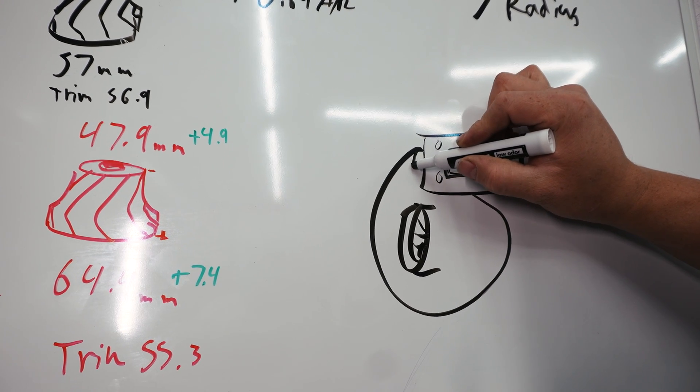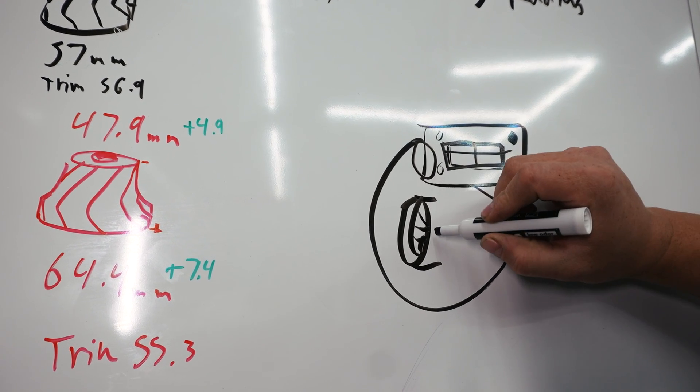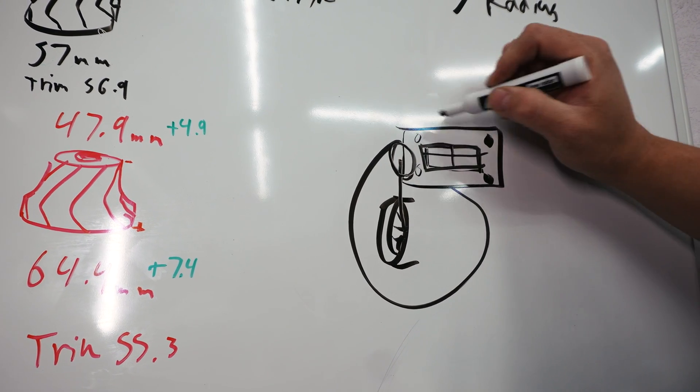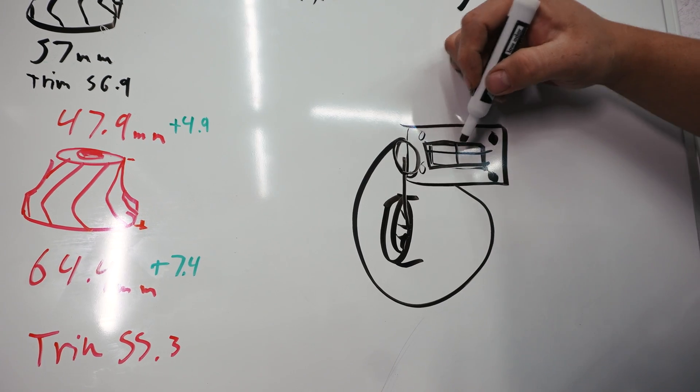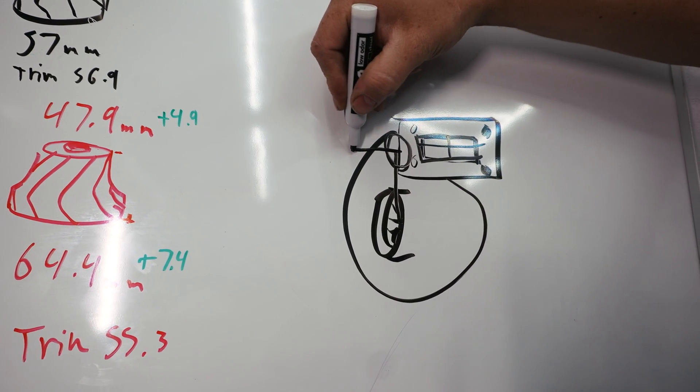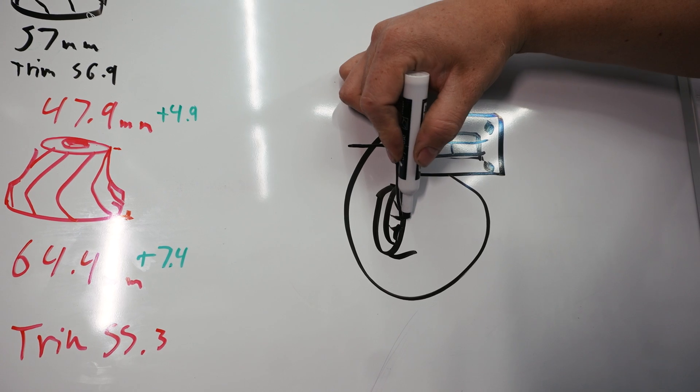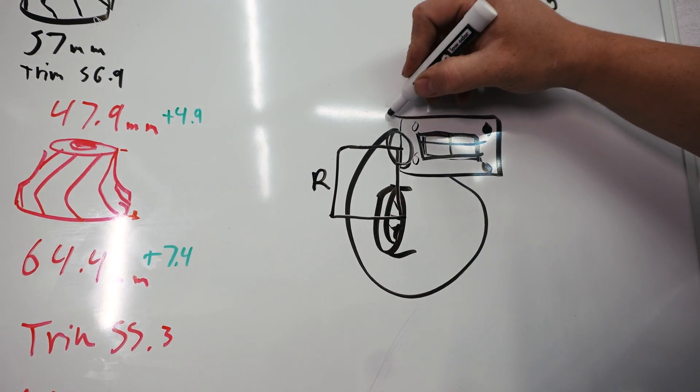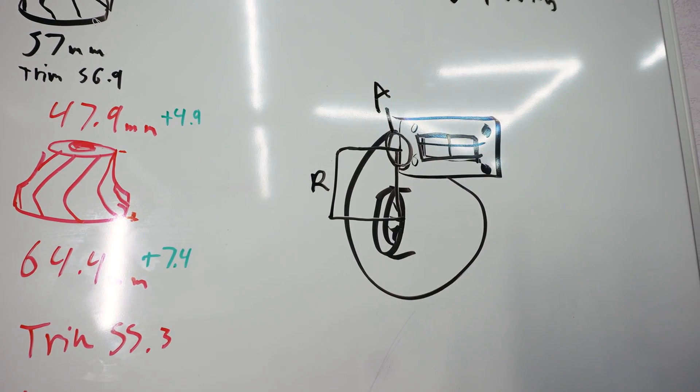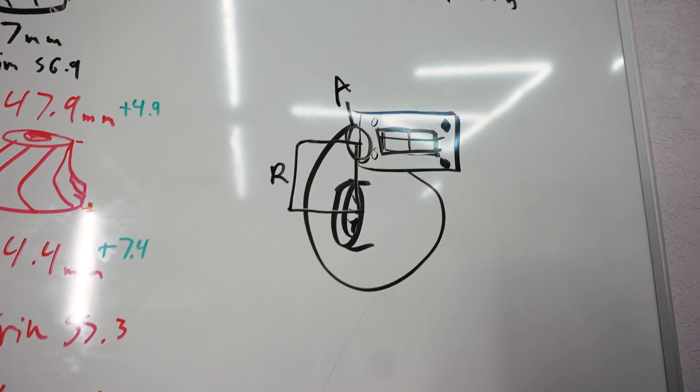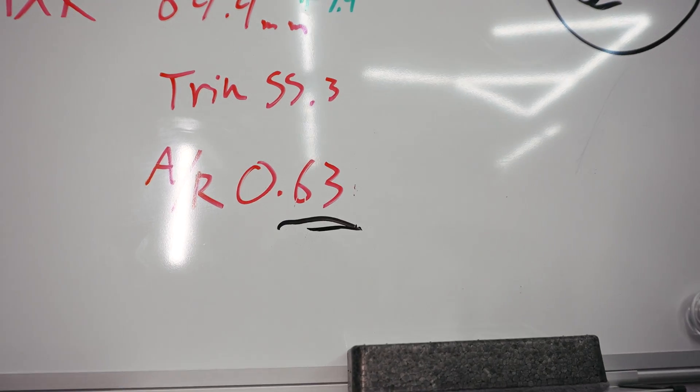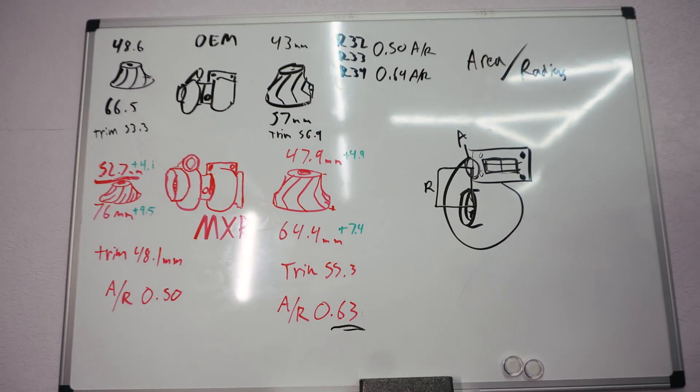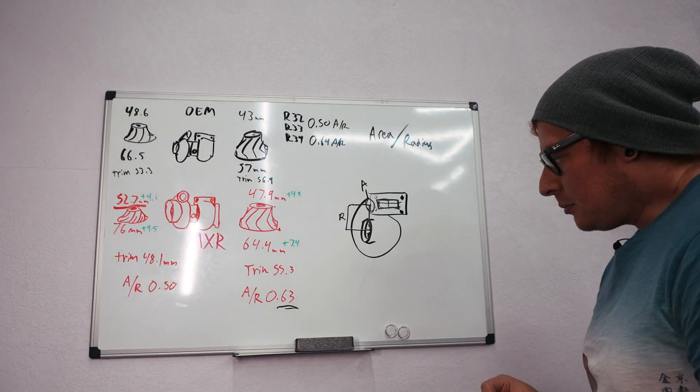This is going to be your area and then the radius is the center of that area versus the centerline of the turbine itself. So that's your radius and that's your area. So you divide that by that and then that'll give you this kind of number - a 0.63 or 0.43, 1.16, 1.5, something like that.